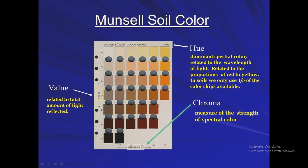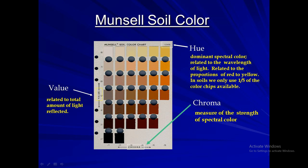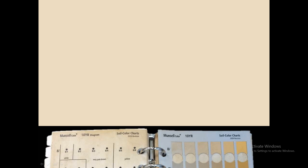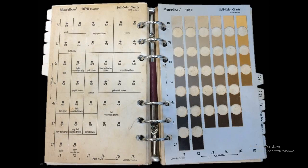This is the Munsell color chart. The upper portion represents hue. The values going from bottom to top — like 2, 4, 5, up to 8 — represent value. The series going from left to right represents chroma. In the Munsell color chart book, on the right side, we match our soil color to the corresponding chip.